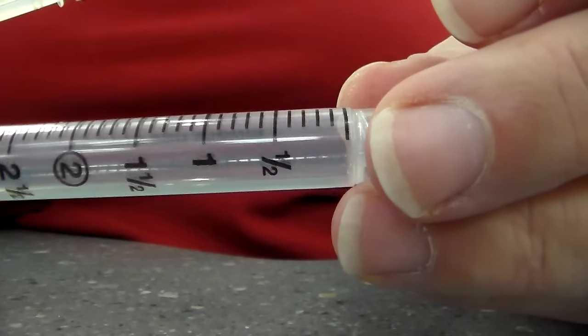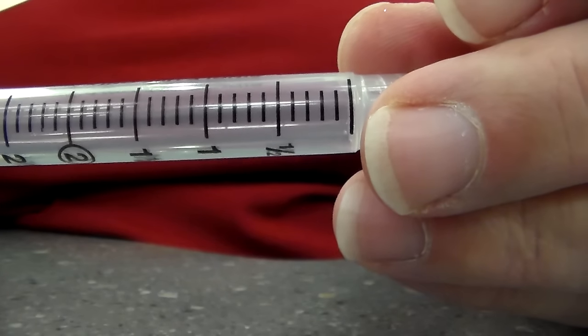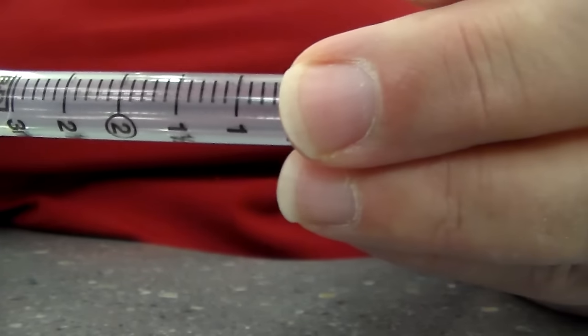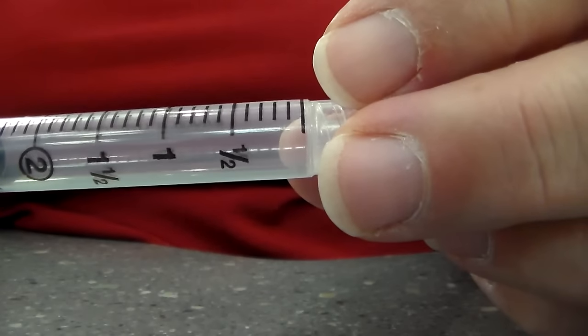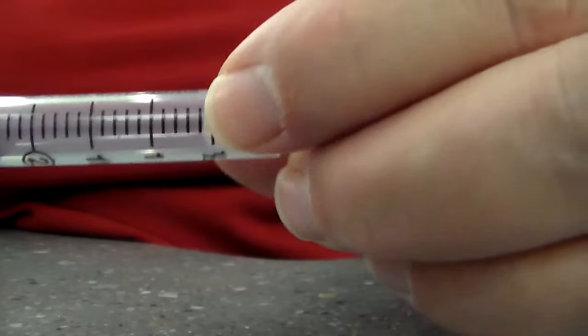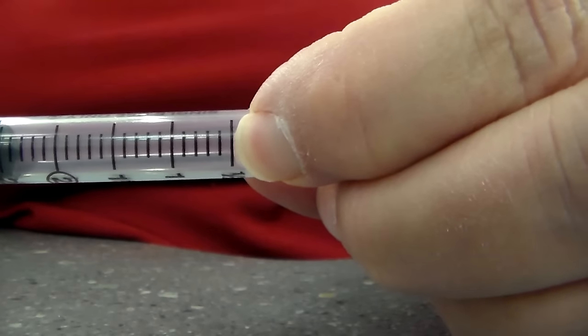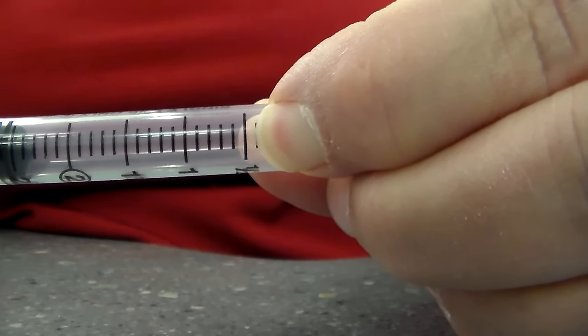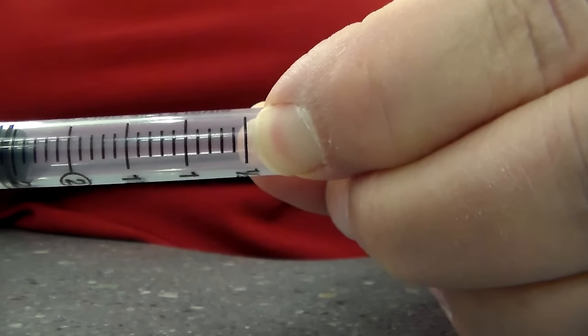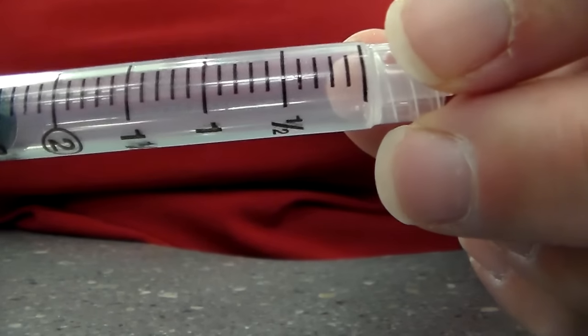So if I had to draw 0.5 of a medication, I want to have that plunger on this line right there. I don't want it just above, I don't want it just below—I want it right on that line so that line disappears.